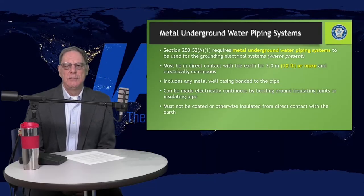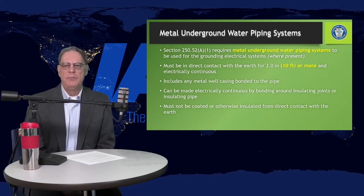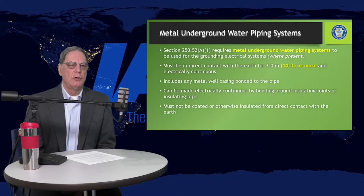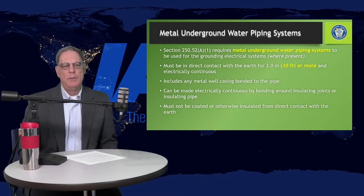So let's look at each one of these in sequence now. Metal in-ground water pipe. What constitutes a metal water piping system as an electrode? It needs to be 10 feet in length or more. It needs to be electrically continuous or made electrically continuous around meters or other items that might need to have bonding.